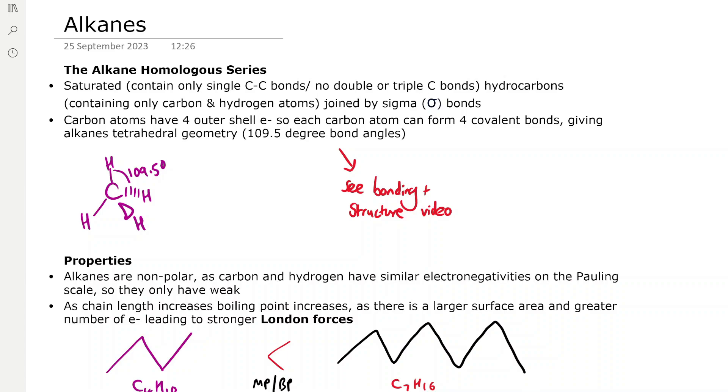If you want more on that see the bonding and structure revision video. Methane has a bond angle of 109.5 degrees with four hydrogen atoms attached, which is the number that each carbon atom forms.